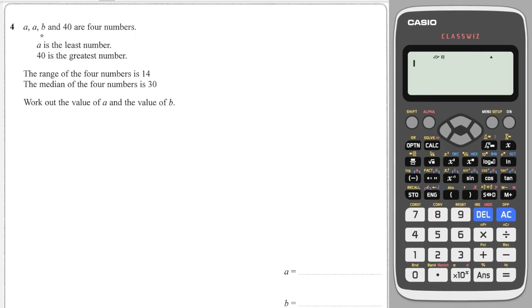Okay, we have a, b, and 40 are four numbers. A is the smallest and 40 is the greatest. The range of the four numbers is 14. Well, great! That means I can work out a straight away because the range is the largest minus the smallest, and that's equal to 14 in this case.